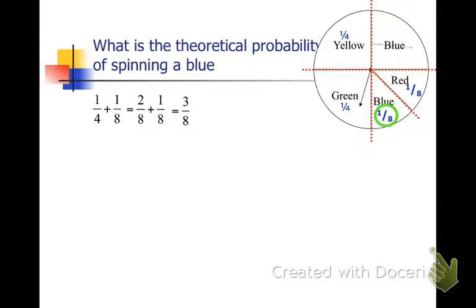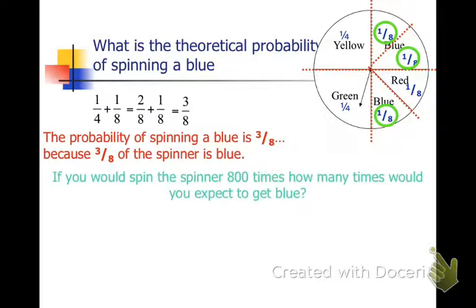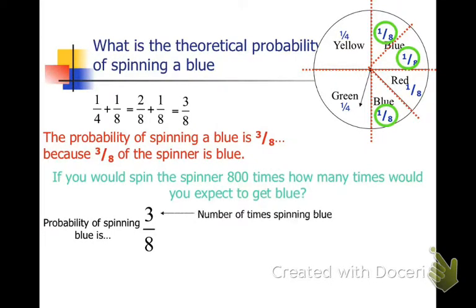Using this information, how many times would you expect to get blue if you spun the spinner 800 times? We can look at the probability. Three out of eight is equal to what out of 800?